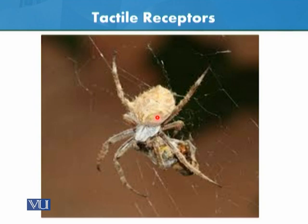So these are the tactile receptors. In vertebrates these receptors are very developed compared to invertebrates. This is the best example to understand what tactile receptors are and how they function. That is all about this type of receptors.